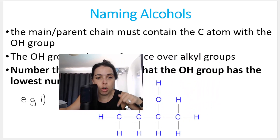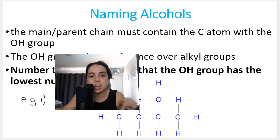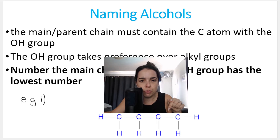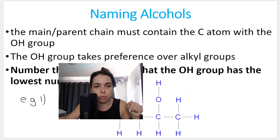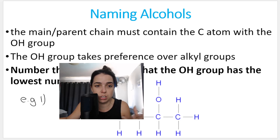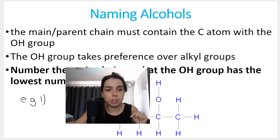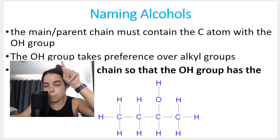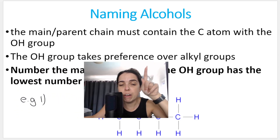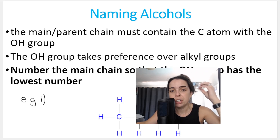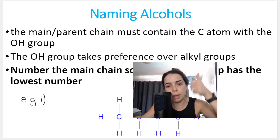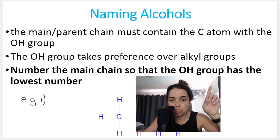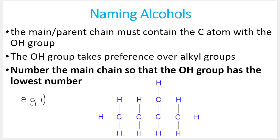When we number the carbons in the chain, we go one, two, three, four or in reverse, depending on the rules. When numbering the carbons in the main chain for alcohols, we number it so that the OH group — the hydroxyl group — takes preference over any alkyl groups such as methyl or ethyl branches. So we number the main chain so that the OH group has the lowest number.